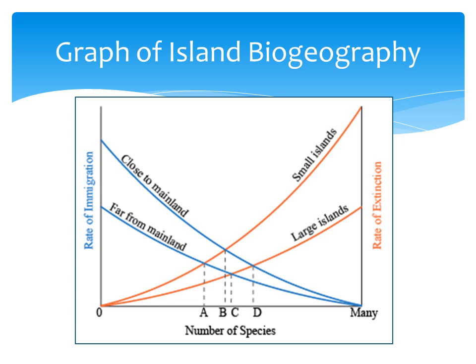This is a graph that demonstrates the main concepts of island biogeography. The x-axis, the independent variable, is the number of species — how many different species live on the island, from zero to many. On the left-hand side, we see an axis representing the rate of immigration. Rate of immigration is shown in blue, and you can see that the rate of immigration goes down as the number of species goes up, because more and more of the species from the mainland have already arrived on the island. Eventually, the immigration rate would be zero if the number of species on the island was exactly the same as the number of species on the mainland. On the right-hand side, you can see an axis that represents the rate of extinction, shown in red lines.